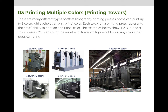You can figure this out because I have them labeled, but you can also look at the printing towers. This printing press clearly has two vertical towers. Each tower represents one color that's being printed, so this is a two-color press. This press has four towers, so it is a four-color printing press.